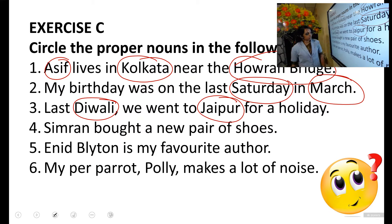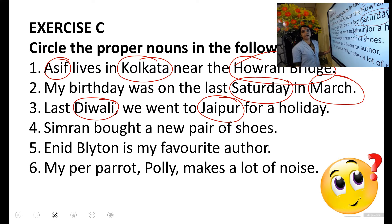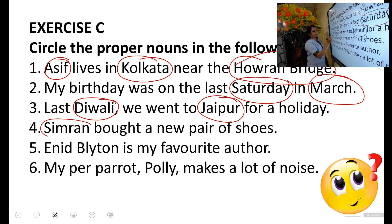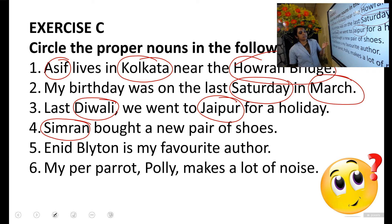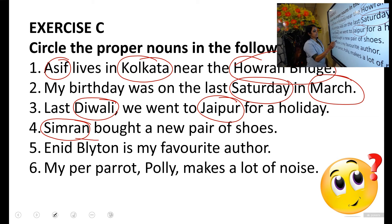Now: Simran bought a new pair of shoes. Any proper nouns? Yes — Simran, the name of a girl. And the next sentence: Enid Blyton is my favourite author. Any proper noun? Yes — Enid Blyton is a proper noun, as it is the particular name of the author.